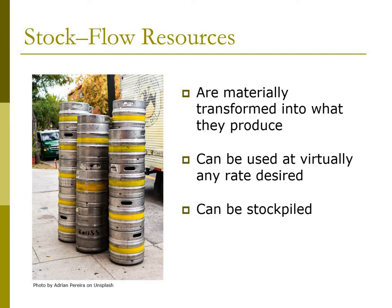They can be stockpiled, and they are used up, not worn out. Besides pizza ingredients, some examples might include fossil fuels, barrels of beer, non-renewable resources like copper, or a bicycle for sale in a store.